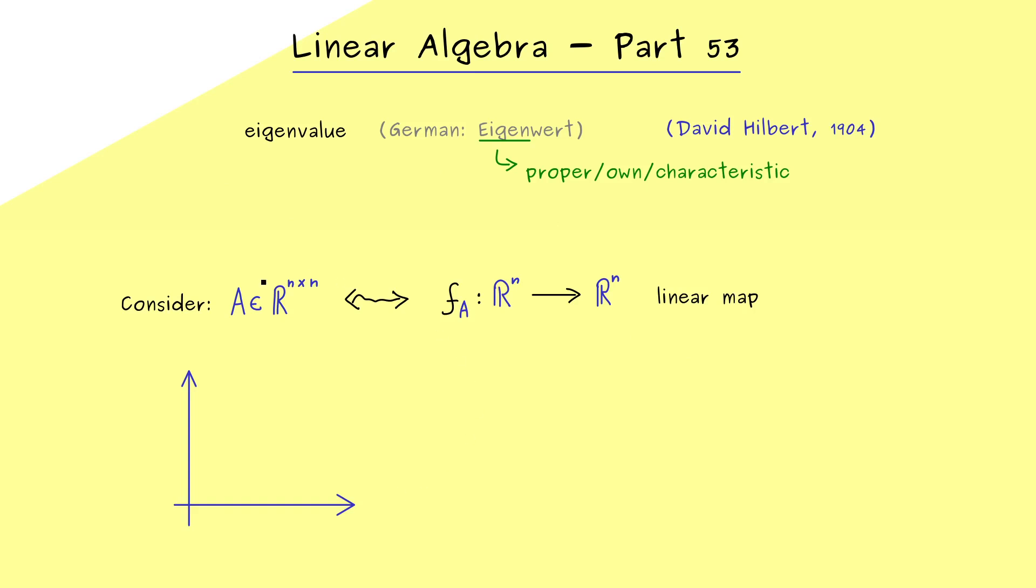And as always, these transformations can be visualized nicely in R^2. So for example, we can observe what such a linear map does to a house. So the question is, how is this sketch of a house transformed? First, important to note is that the codomain is the same, so we land in R^2 again.